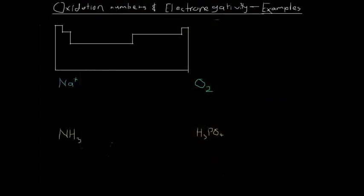Here we have a couple of examples on how to calculate the oxidation numbers of atoms in different compounds. We know that the sum of all the oxidation numbers of atoms in a compound, or in a monoatomic ion with one atom in it, have to add up to the charge.